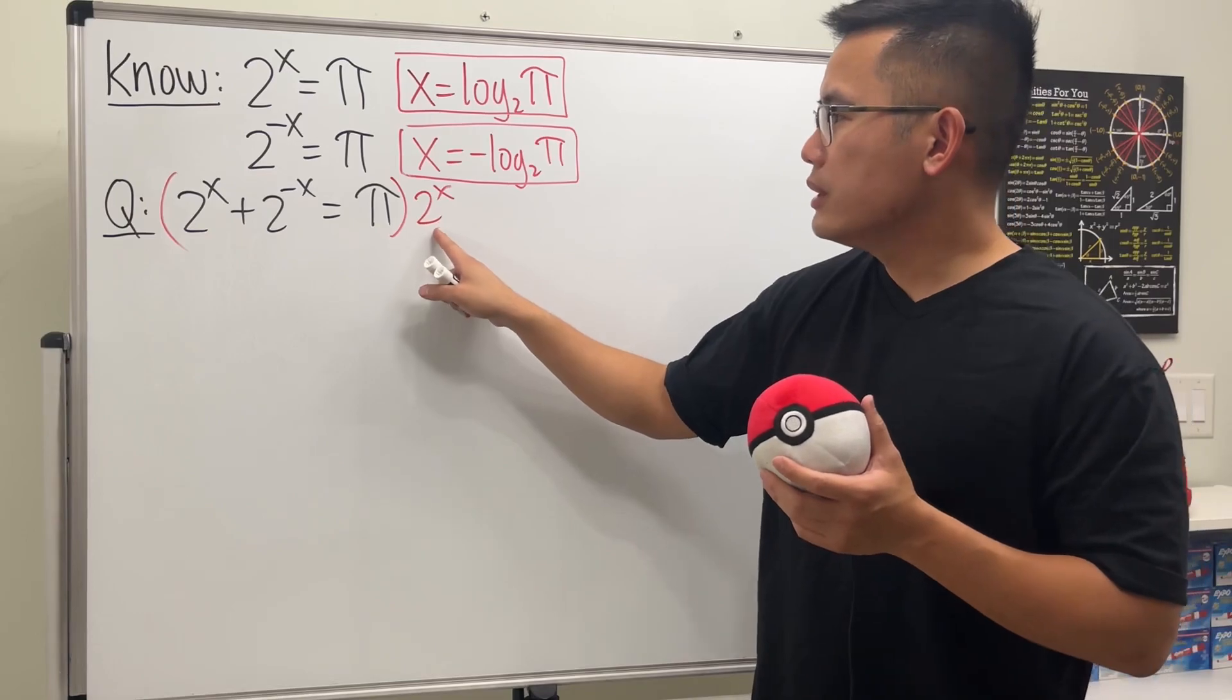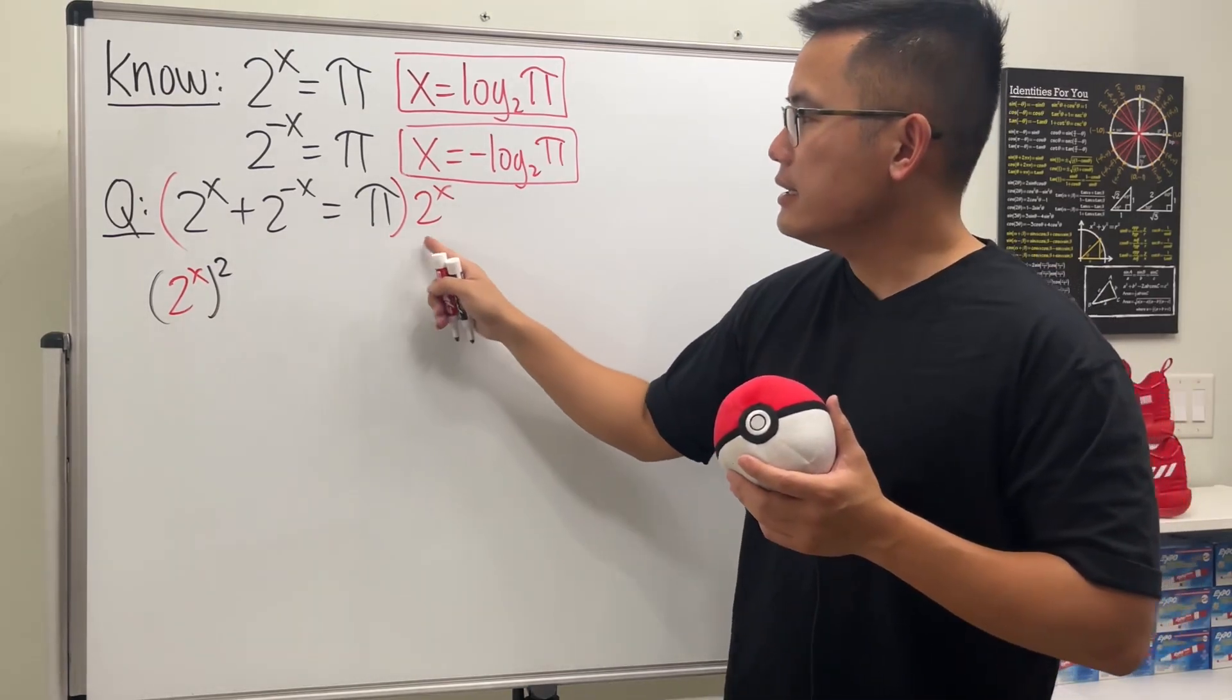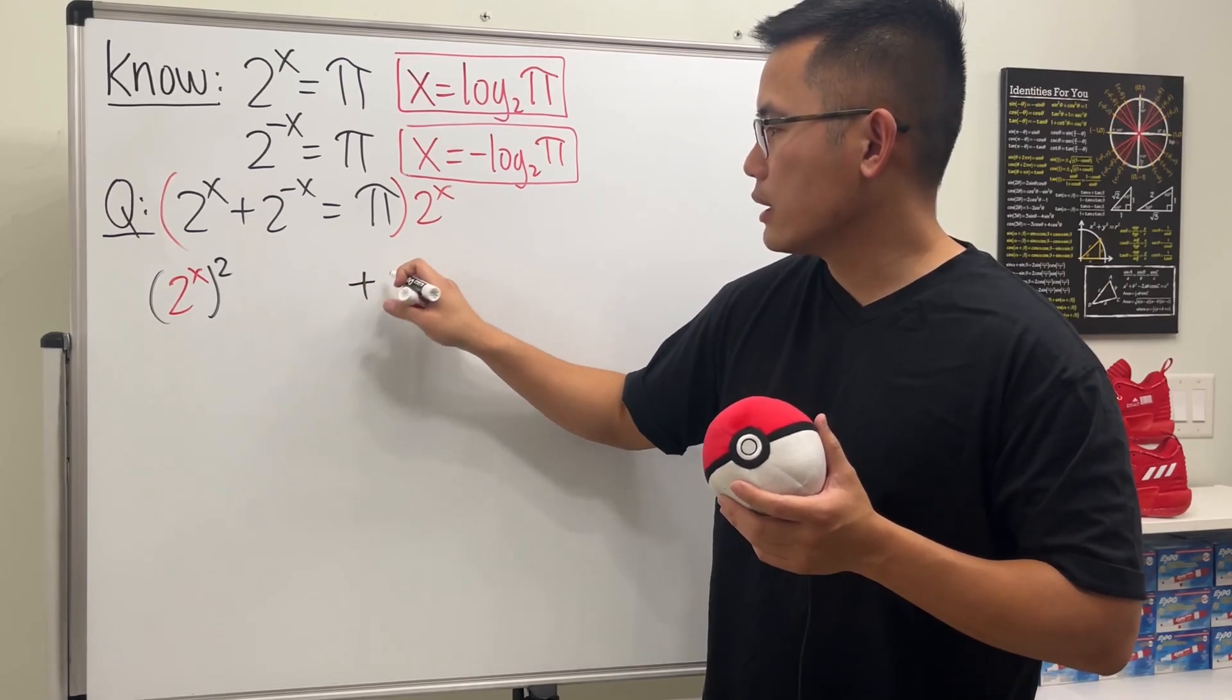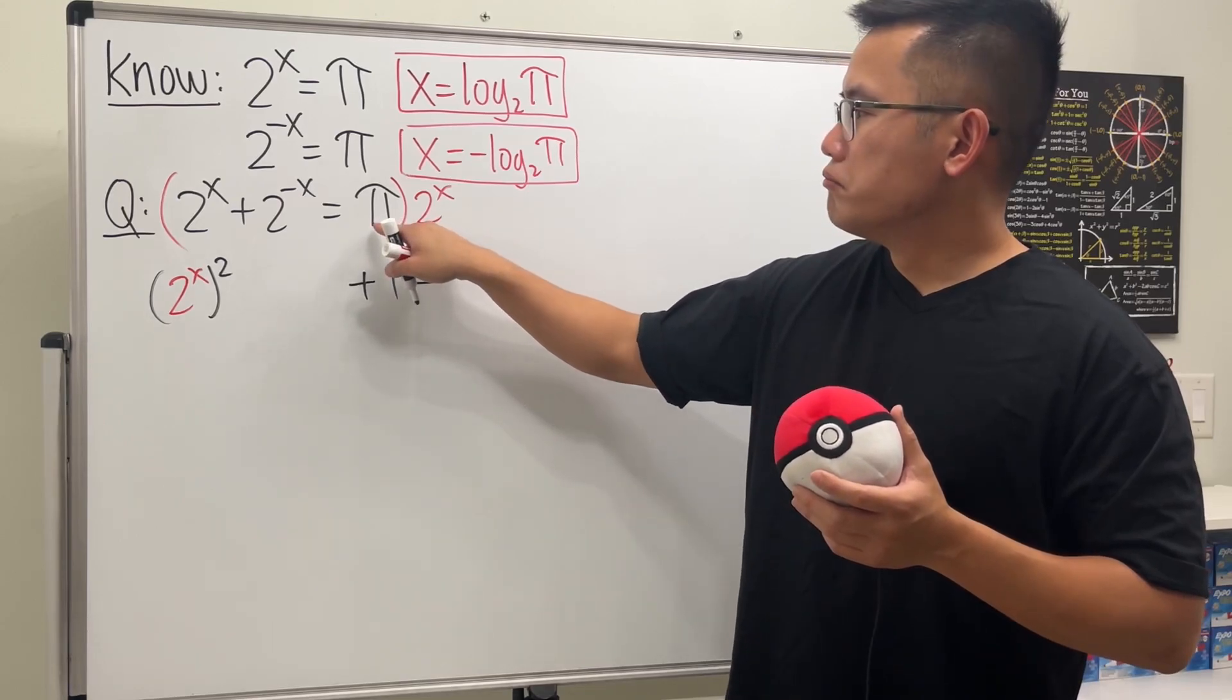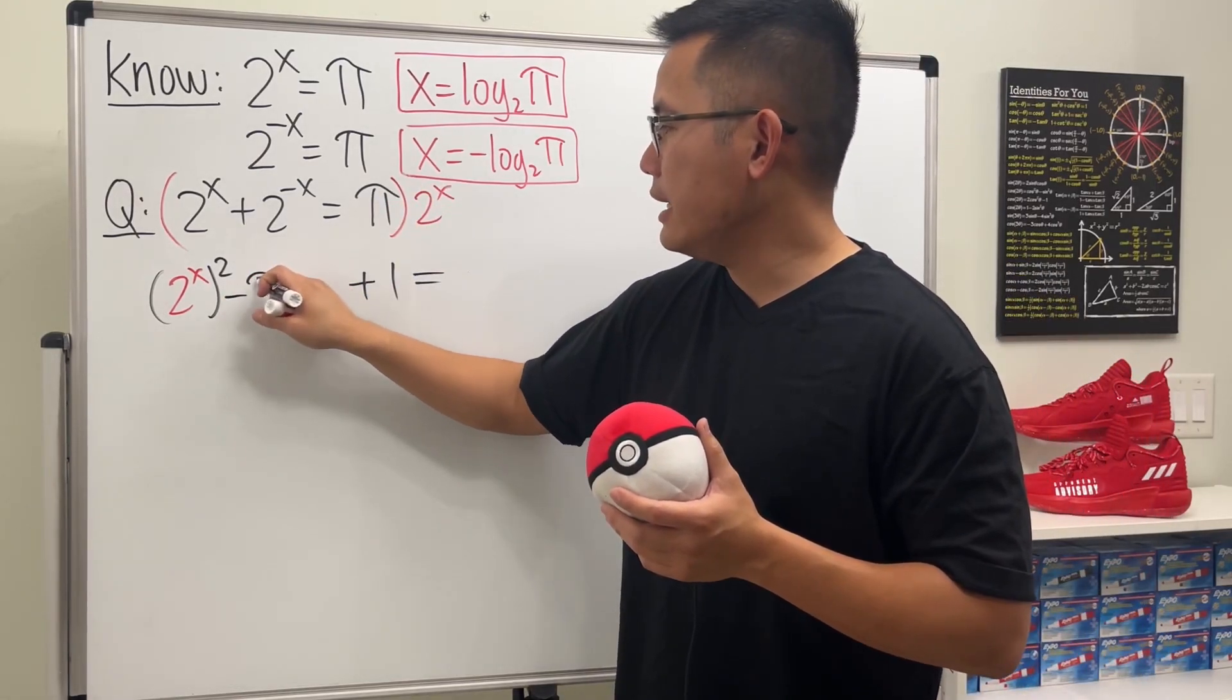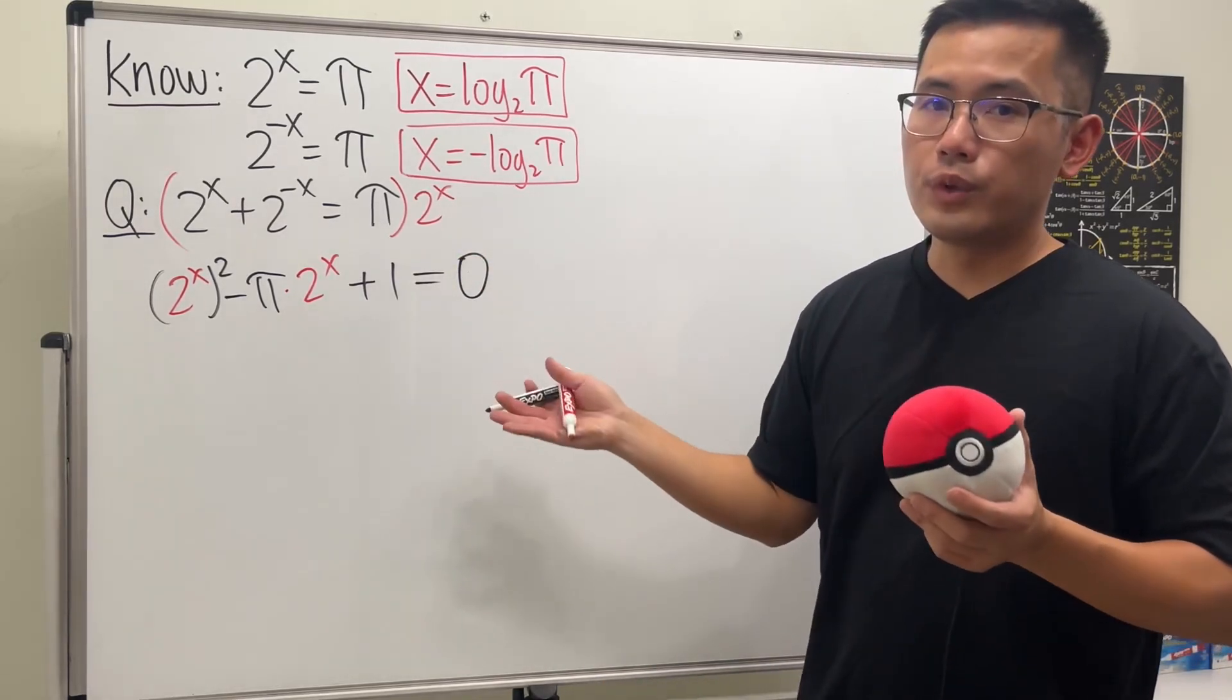So be careful, though. When we do this term, I'm going to write it as 2 to the x and then square, all right? And then this term is just going to be 2 to the 0. It's just 1. I'm going to put it here, so I'm just going to say plus 1. And then that's equal to pi times 2 to the x. But let me move it to the left-hand side. So I will look at this as negative pi times 2 to the x.